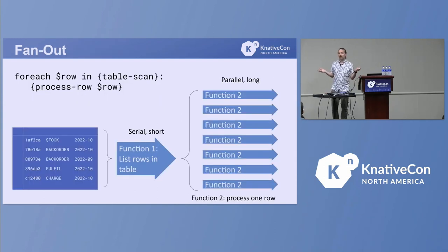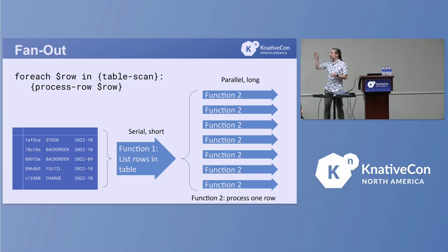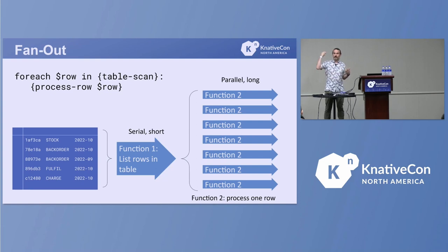A common pattern at the beginning of map-reduce is to go over a table and for each row, run something. You can build this with two separate functions today — one that scans the table and fires off events, and a second that consumes each event and processes that row — but it would be really cool if you could make that a first-class expression: here's my scanner, here's my per-row function, and have things scale out horizontally.